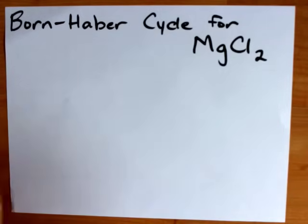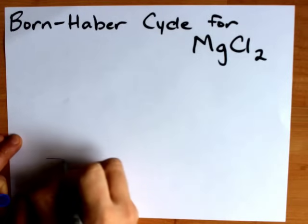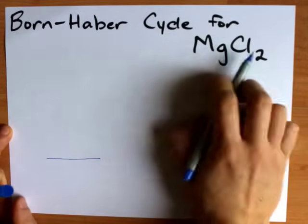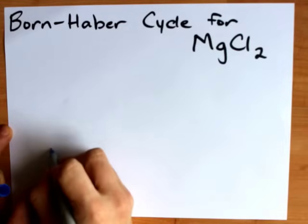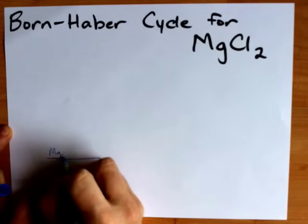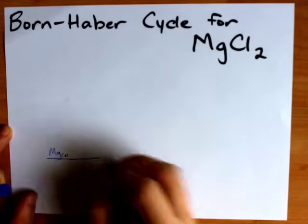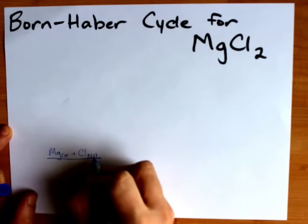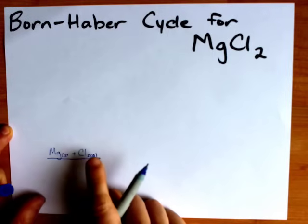Now I like to start with my pure elements in standard state right about here. My pure elements in this case are magnesium, which is a solid at room temperature, and chlorine, which is a gas at room temperature.